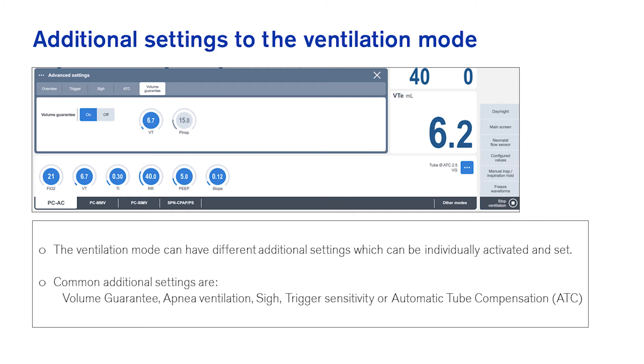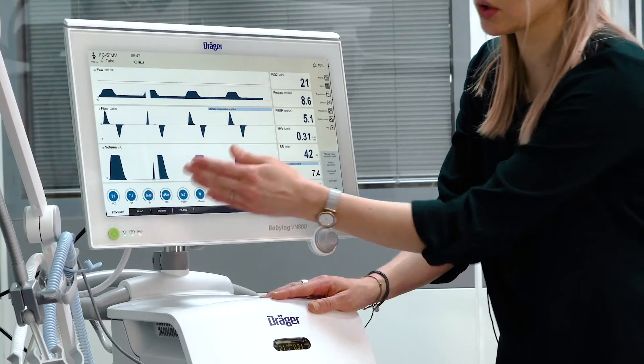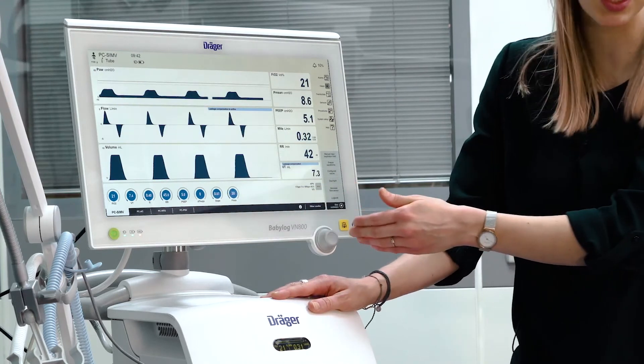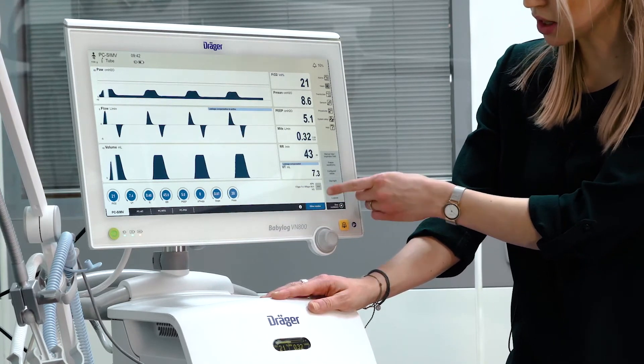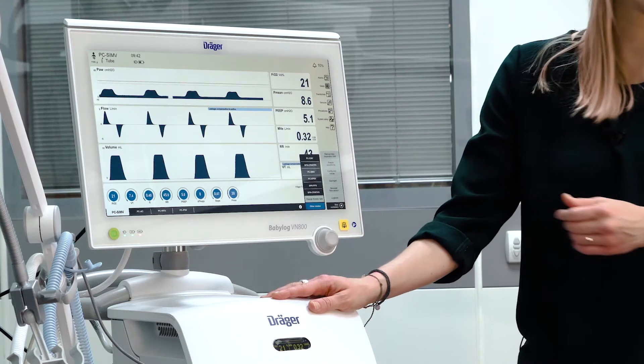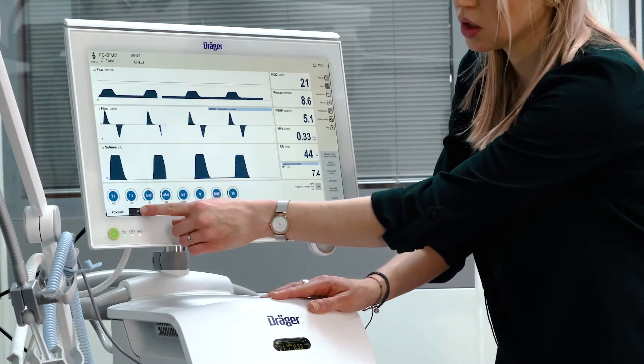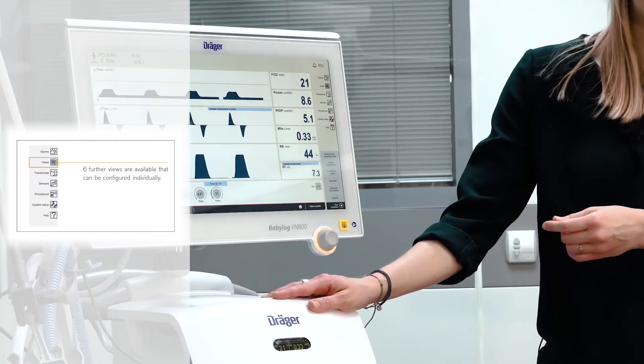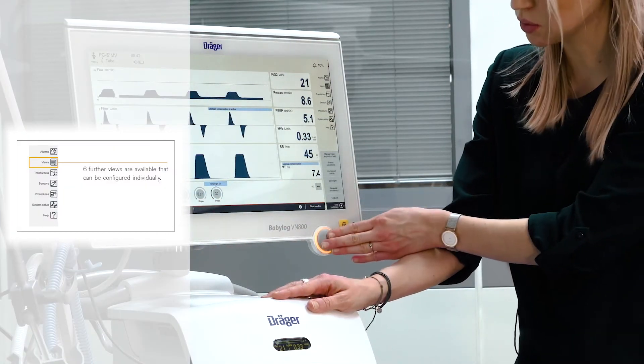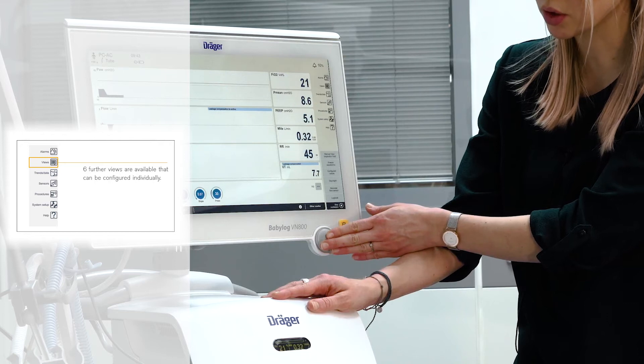If you want to switch to a different ventilation mode, you can choose a ventilation mode from the pre-configured list or you can enter other modes where you will find further selections. To change the ventilation mode, select the respective ventilation mode and confirm by pressing the rotary knob.